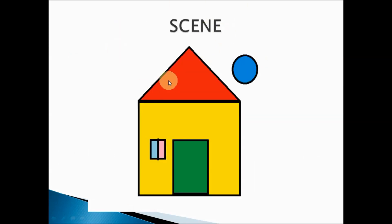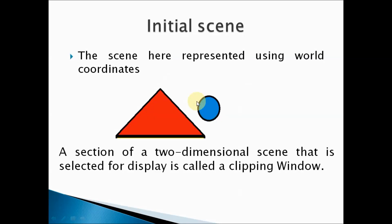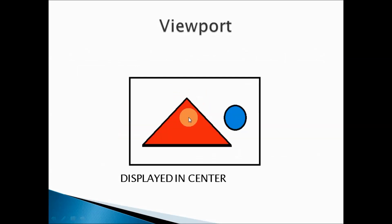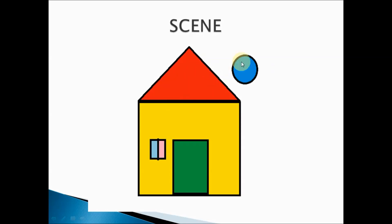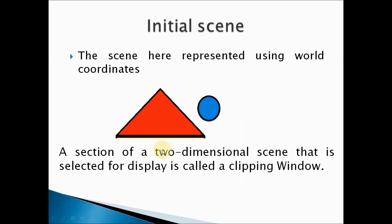The scene is represented using world coordinates, because it exists in the real world. Now, in the real world scene, I don't want to display everything on my computer screen. For example, I don't want the entire scene — I only want the upper portion, such as the triangle and the circle.